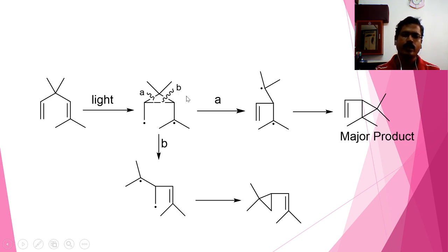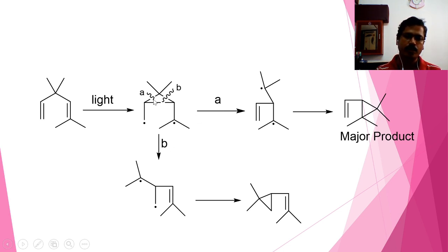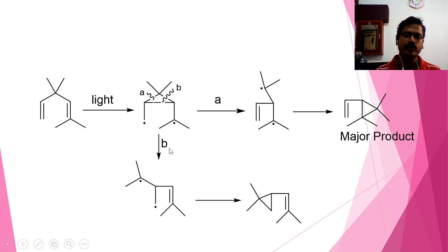Now, which bond would cleave — whether it would be according to A or according to B? When it happens according to A, you get a double bond here and a radical here. If it takes place according to B, you will get a double bond here and a radical here.